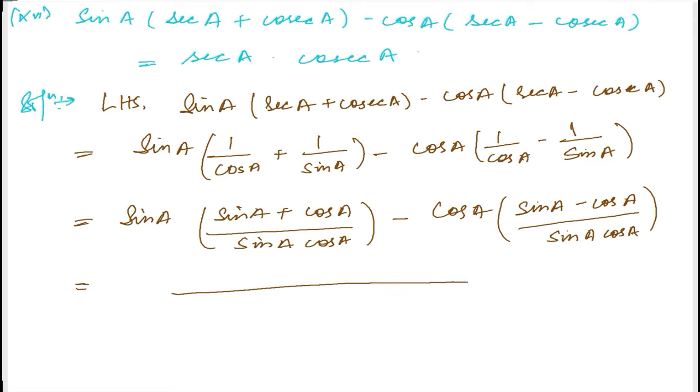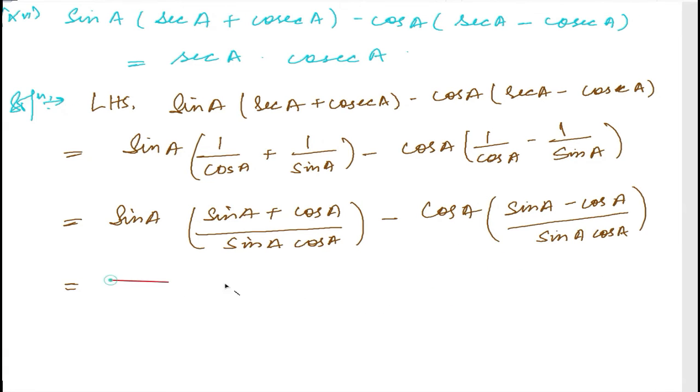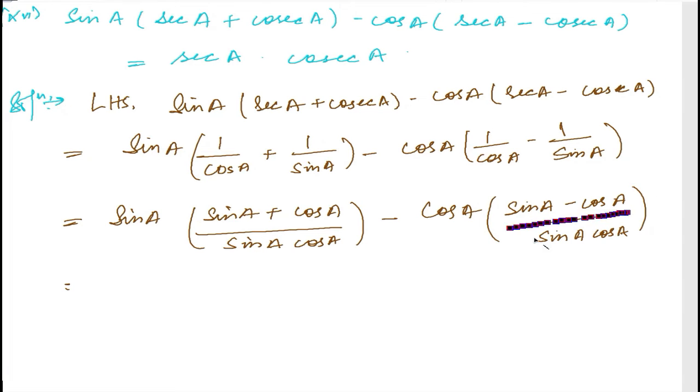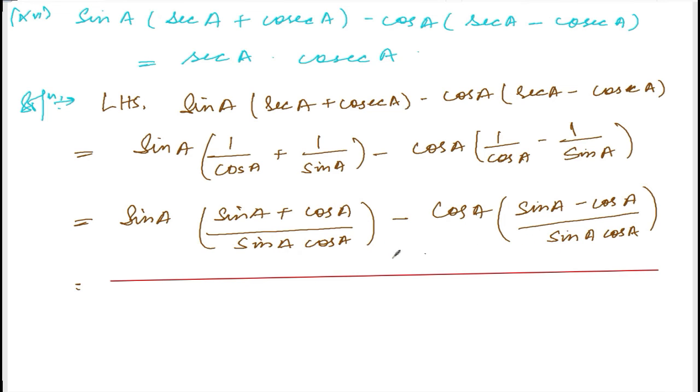Now if I take the LCM, whole LCM, it will be sin A cos A. Let me take a proper line here. Taking the LCM, the denominator is sin A cos A for both. So write down sin A and cos A.